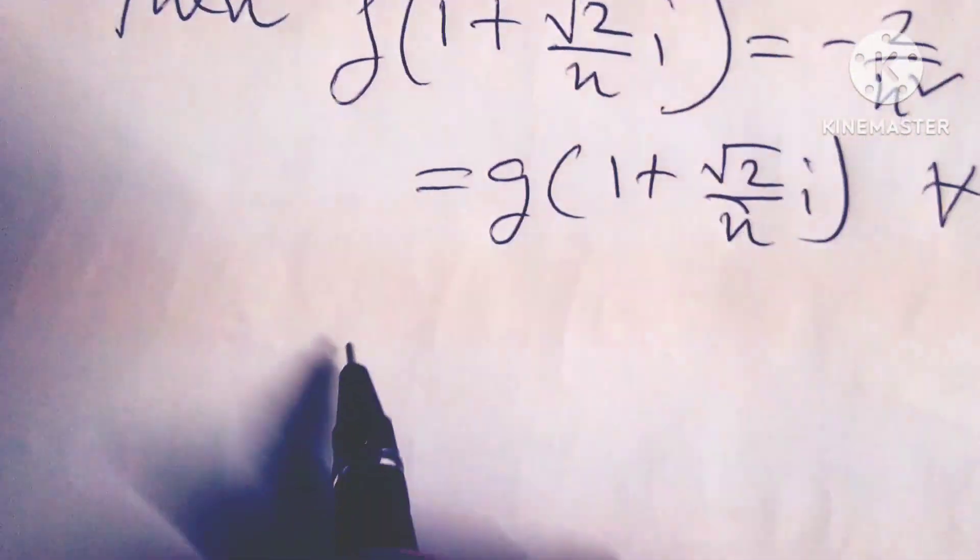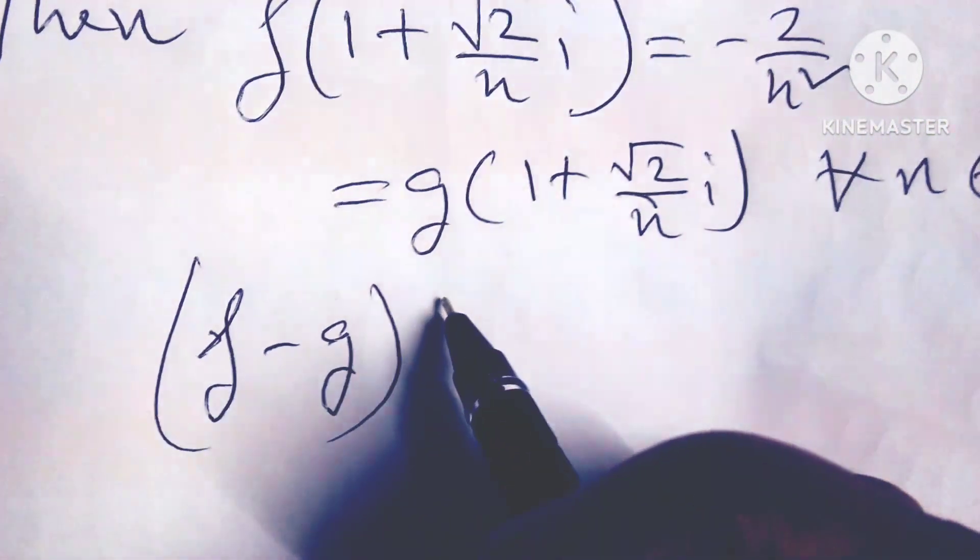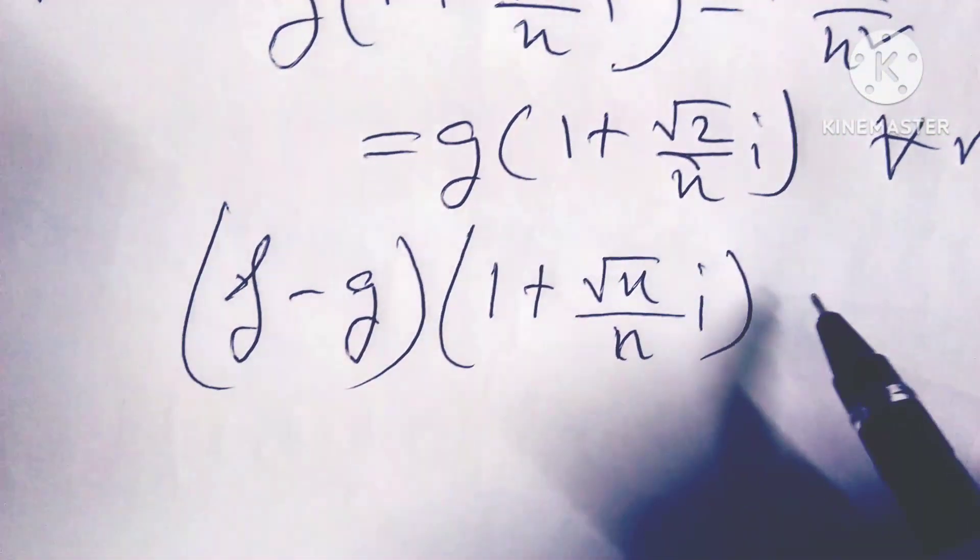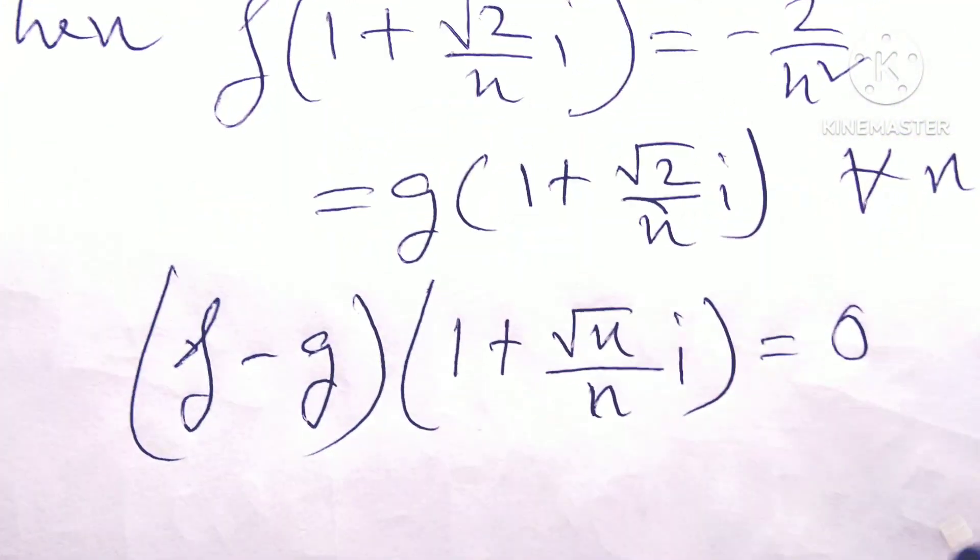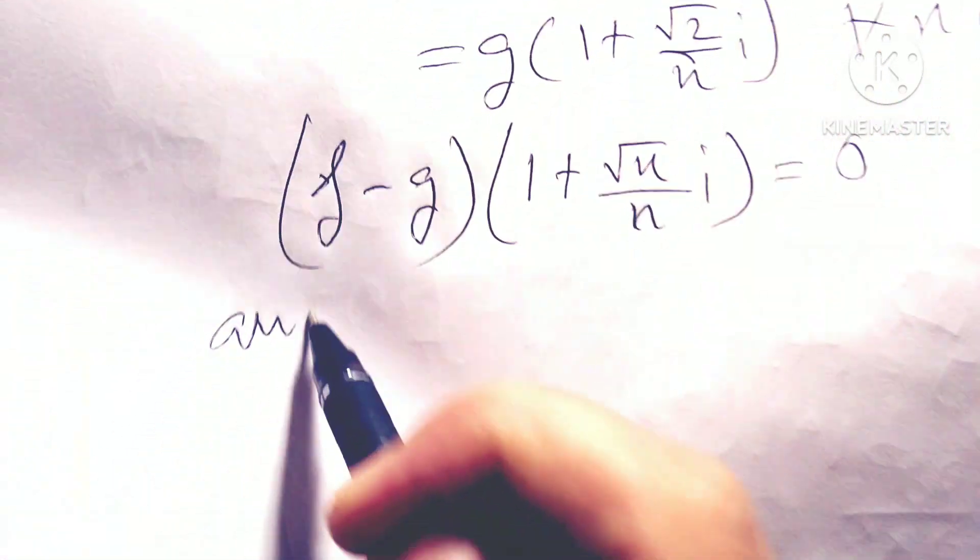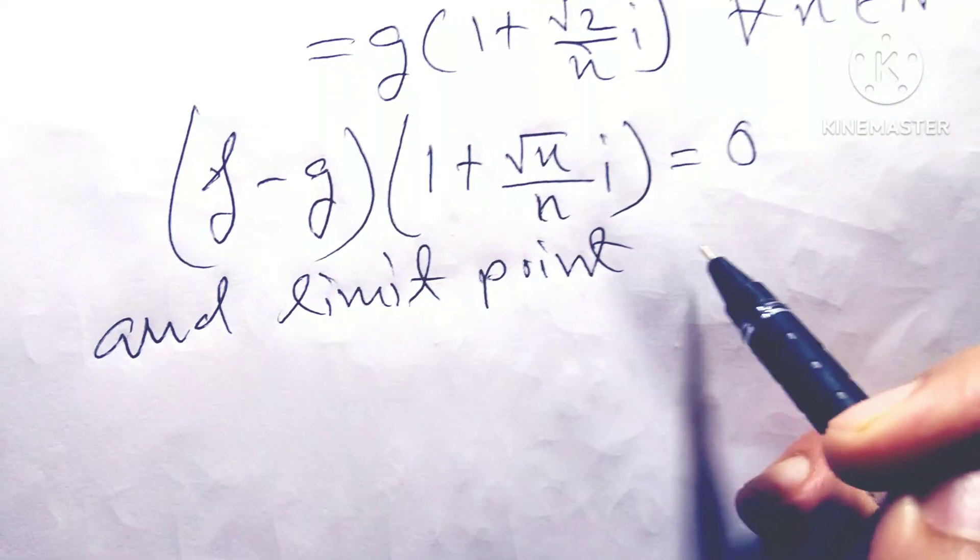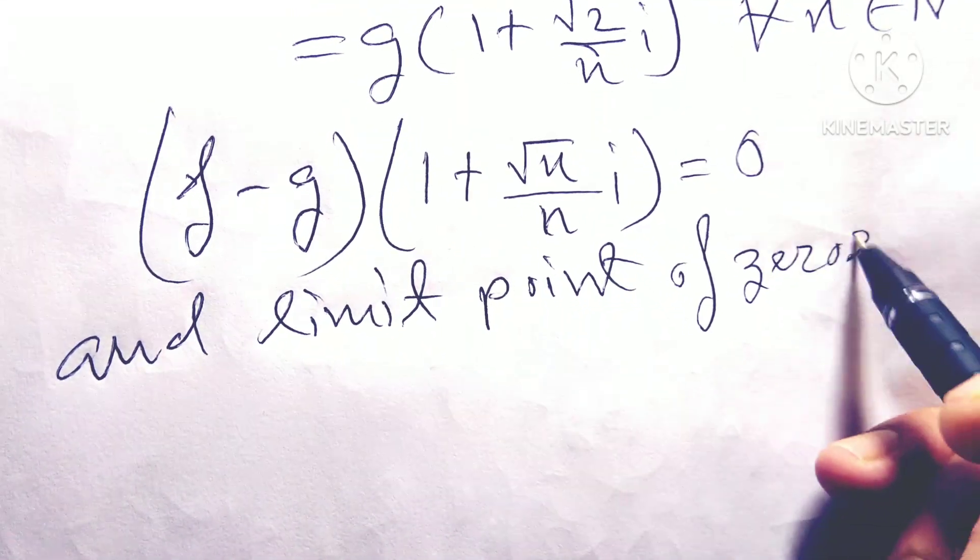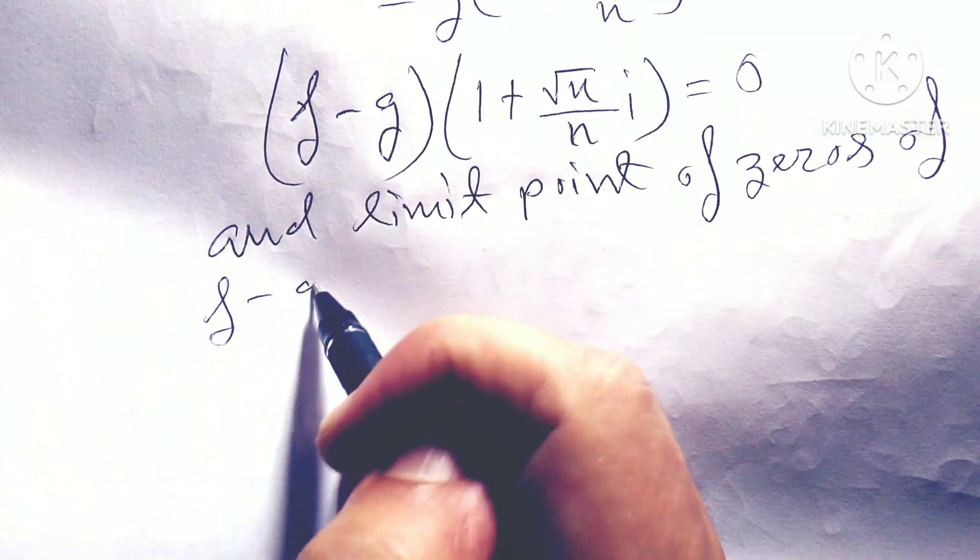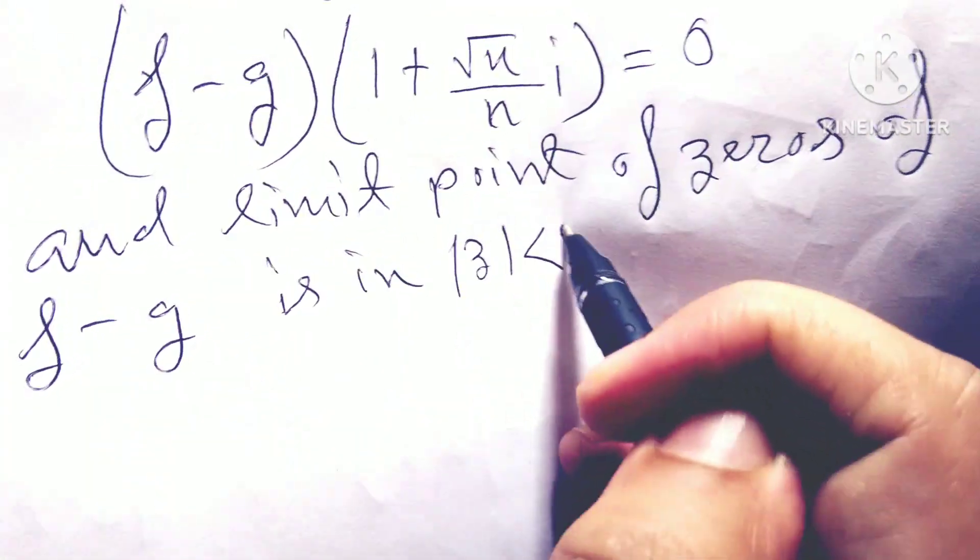So friends, now (f - g)(1 + √2n/i) = 0. So the limit point of zeros of f - g is in |z| < 3.